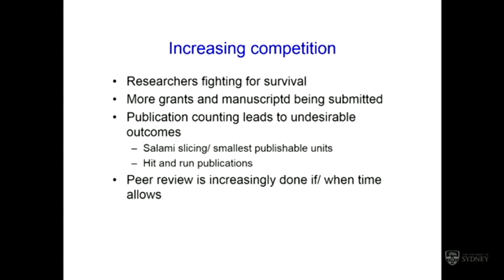That very activity leads to increased demand on peer reviewers. Because it's difficult to assess publication quality, increasingly output is measured simply through counting — either counting grants, dollars, or publications. Publication counting leads to undesirable outcomes, such as dividing data into the smallest publishable unit — also termed salami slicing — and hit-and-run publications, where researchers publish a large paper, get attention, then move on before the work is validated. In this demanding environment, peer review is often put to the side and done at the last minute, at night, when and if time allows.